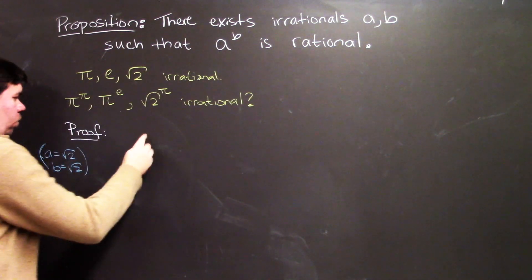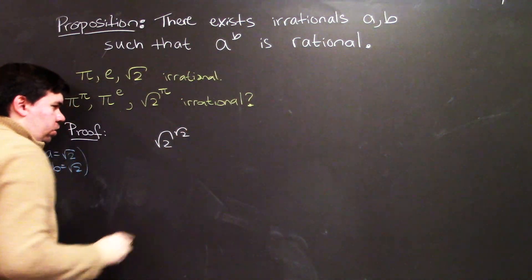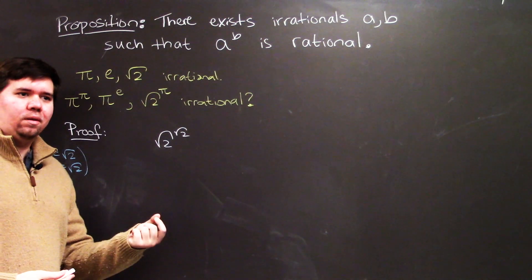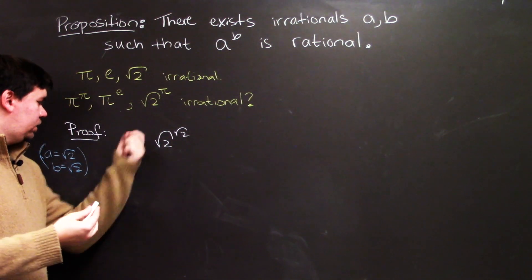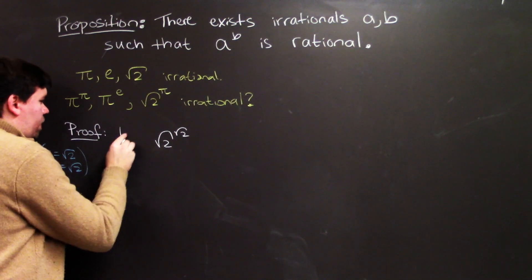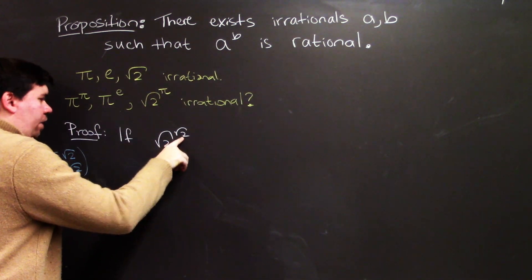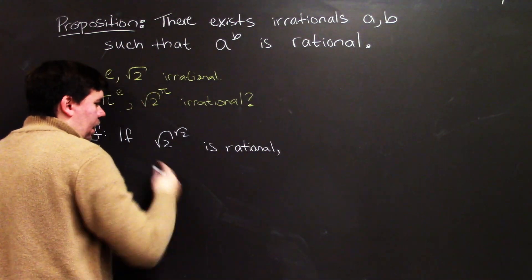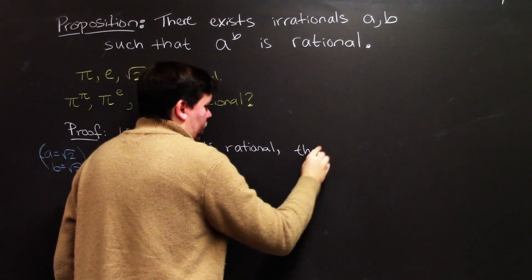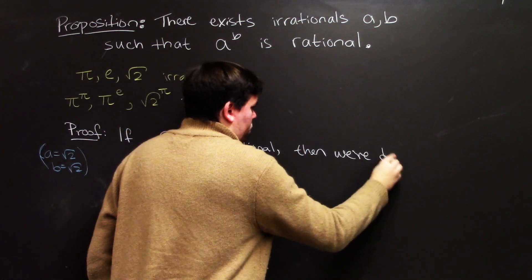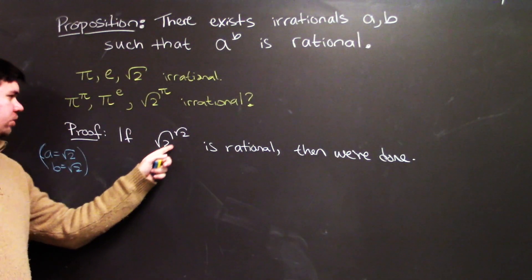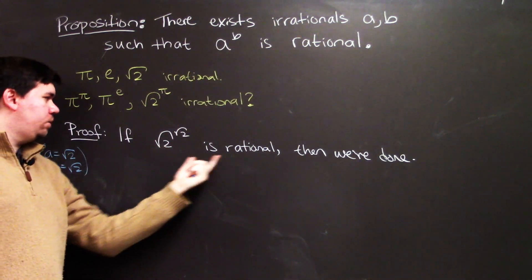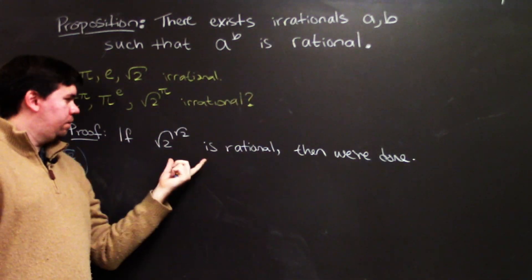You might wonder: what is true of the square root of 2 to the power of the square root of 2? Is it rational or irrational? Well, I don't know — so let's just consider some possibilities. If the square root of 2 to the power of the square root of 2 is rational, then we're done. We have an irrational to an irrational, where a and b are both irrational, and it comes out to be rational.